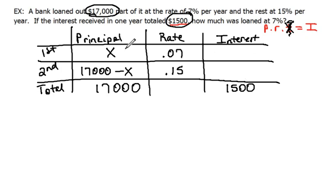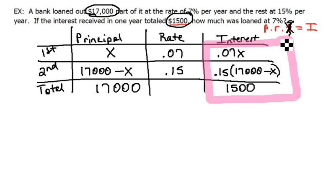Well, the way that we find our interest is principal times rate equals interest. So point oh seven times X would be the interest on this first account. Point one five times seventeen thousand minus X would be the interest on the second account. Now this is your equation right here, because the interest from the first account plus the interest on the second should equal our total interest.